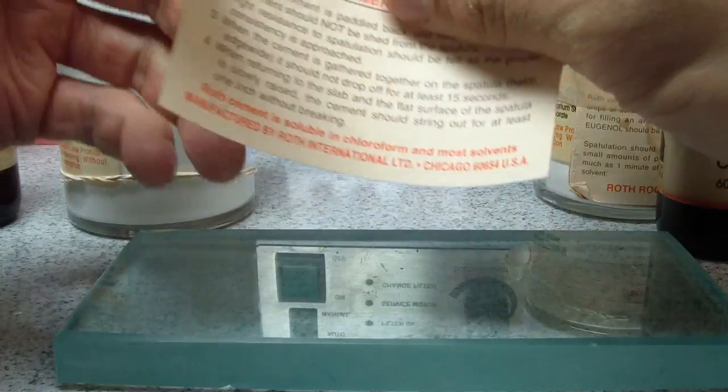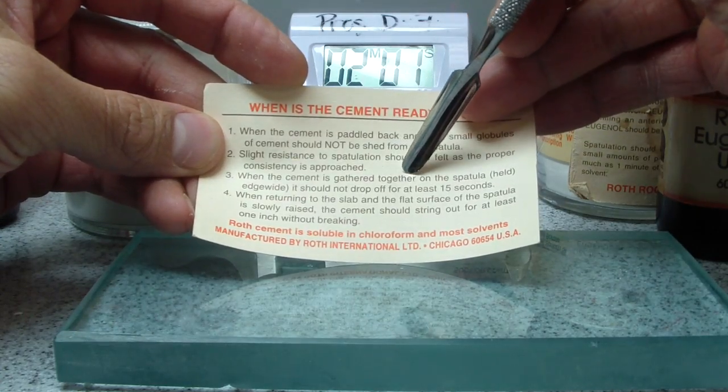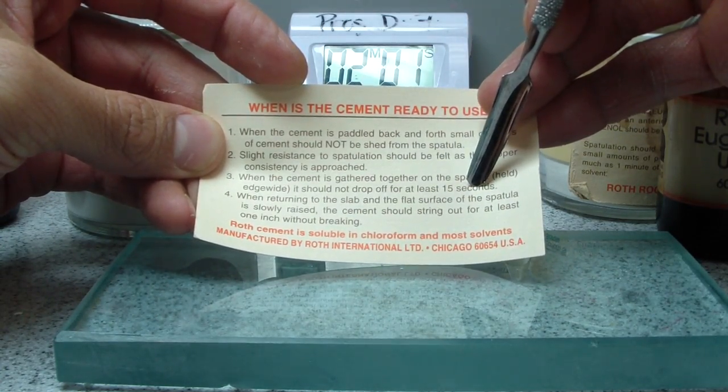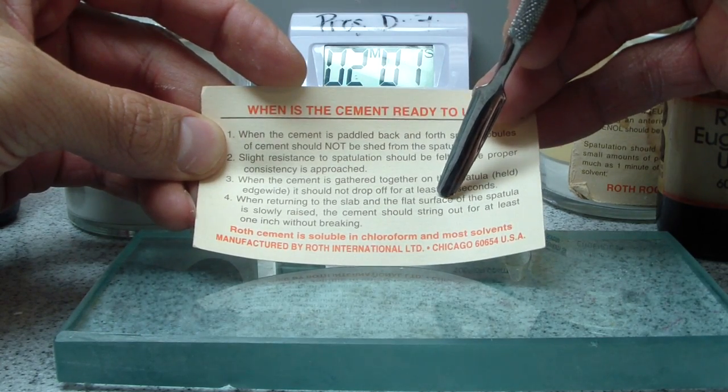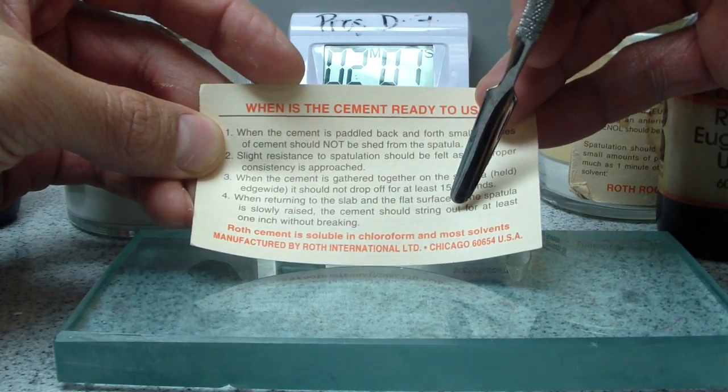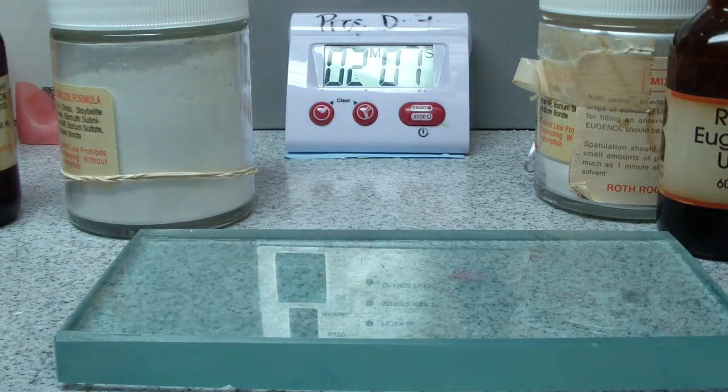And then on the back—so I'll take a picture and put this up. Paddle back and forth. When the cement is gathered together on the spatula held edgewise, it should not drop off for at least 15 seconds. When returning to the slab and the flat surface, the spatula slowly raised, the cement should string out for at least one inch without breaking. So 15 seconds and one inch. I mean, I remember I learned that in dental school 13 years ago.